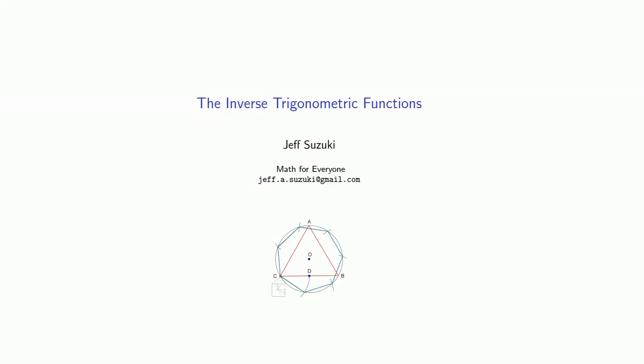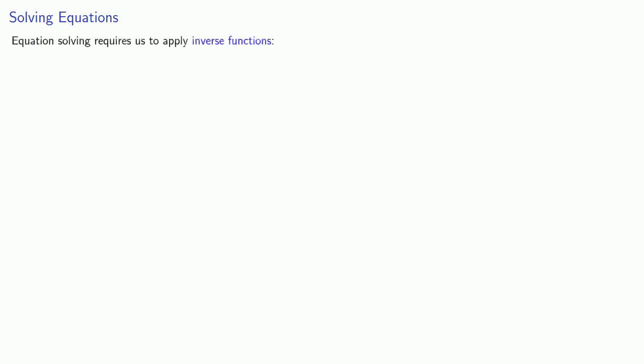Given an angle, we can find the sine, cosine, tangent, secant, cosecant, or cotangent of that angle. But we can also go backwards. And we want to do this so that we can solve equations. Remember, equation solving requires us to apply inverse functions.